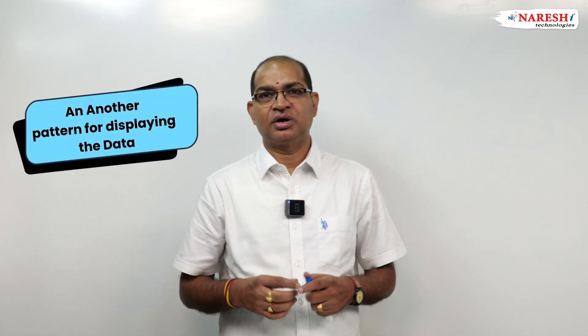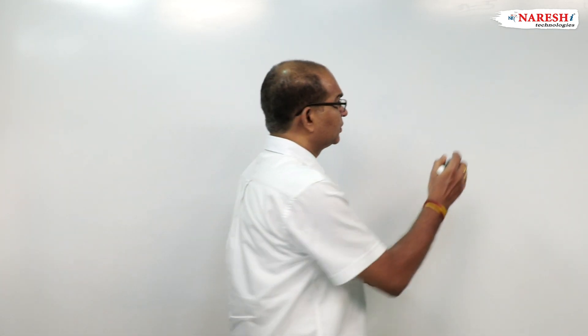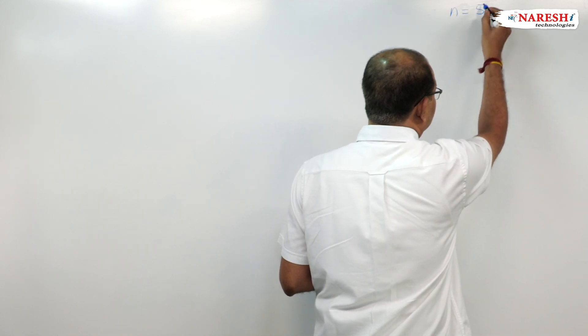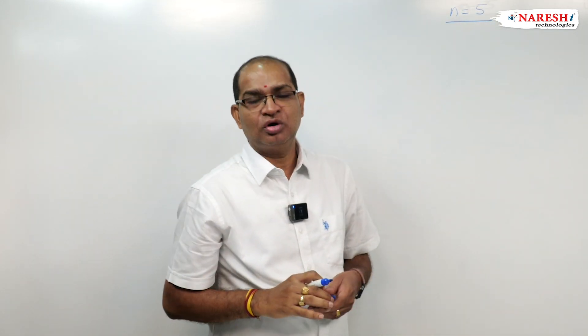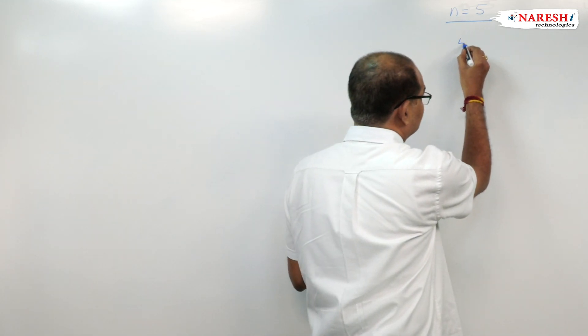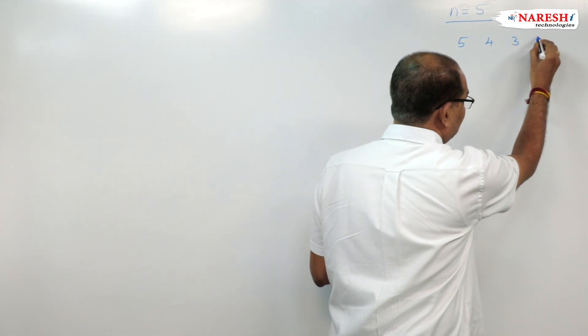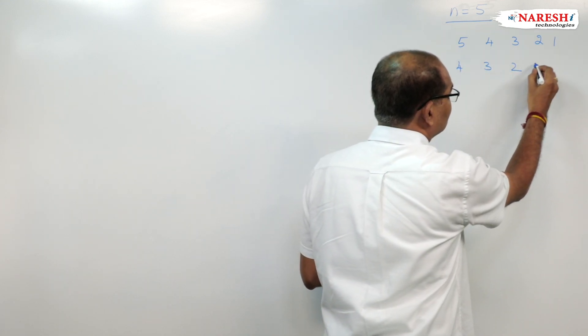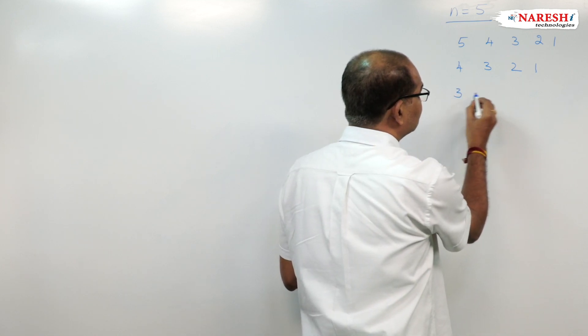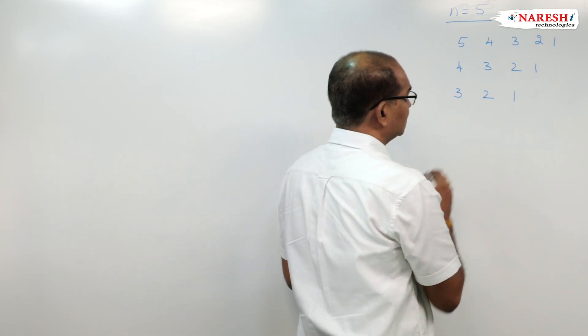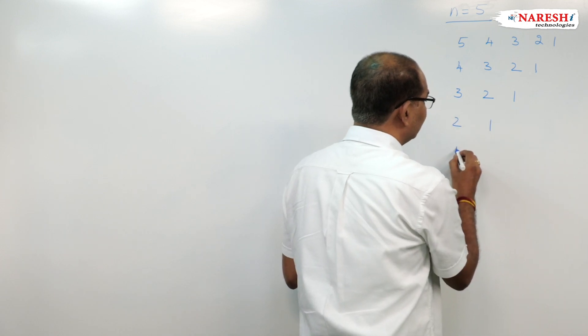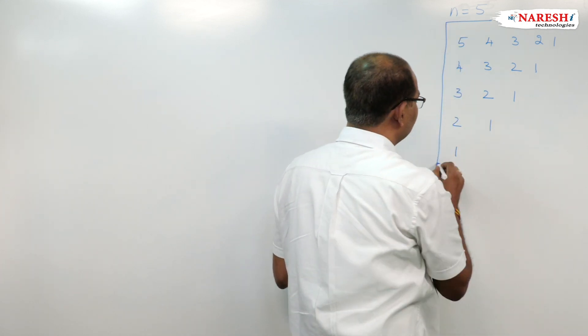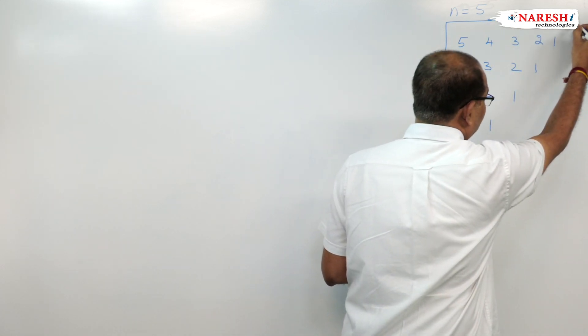In this video, I am explaining another pattern for displaying data. The pattern model is something like this: n is equal to 5, that means 5 rows. The data to display is: 5 4 3 2 1, then 4 3 2 1, then 3 2 1, then 2 1, and then 1. This is the pattern I want to display.